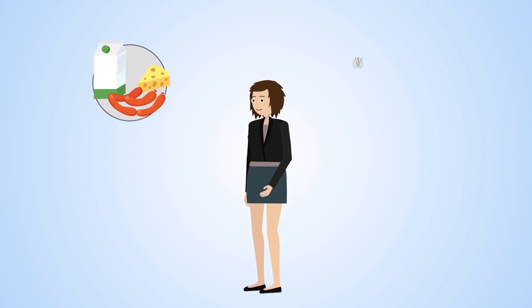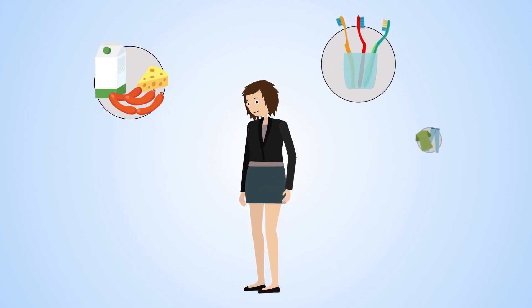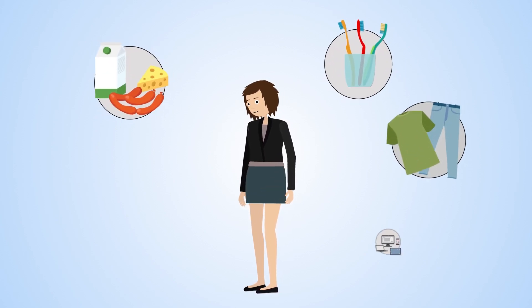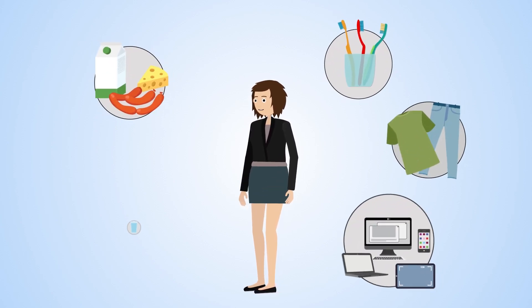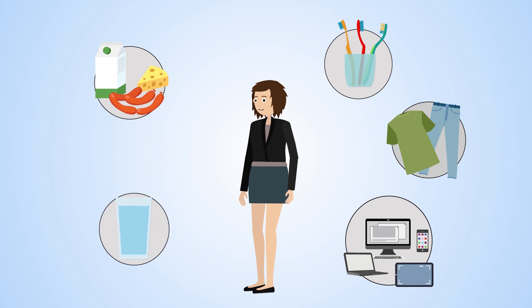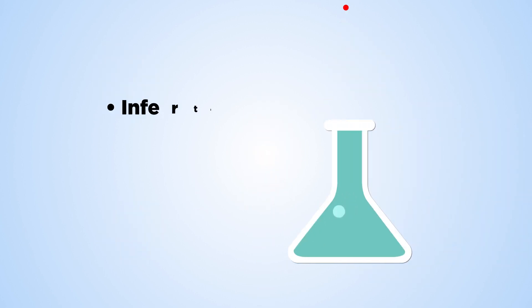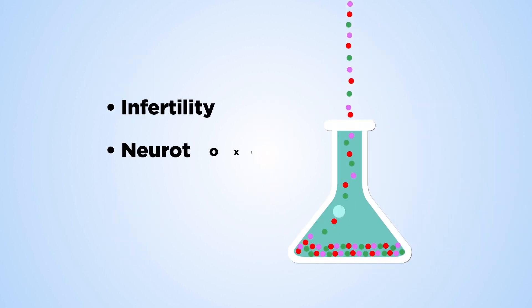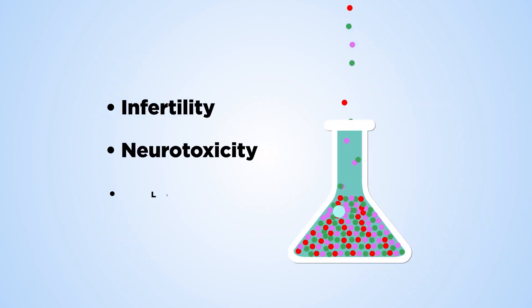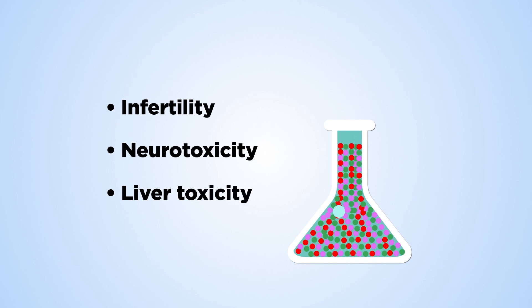Humans are exposed to chemical mixtures throughout their lifetime. They come from many sources such as foods, personal care products, drinking water, or electronic equipment, and may cause diseases such as infertility, neurotoxicity, or liver toxicity.